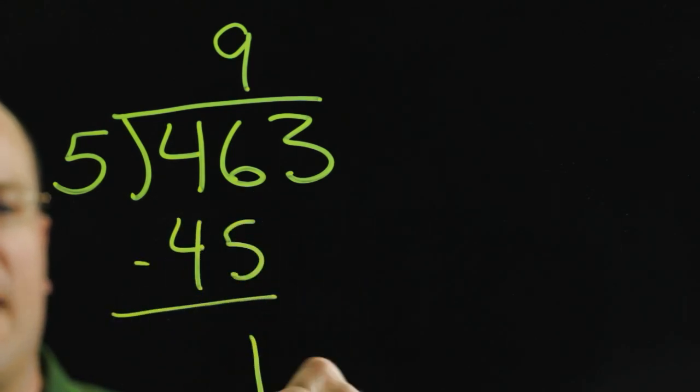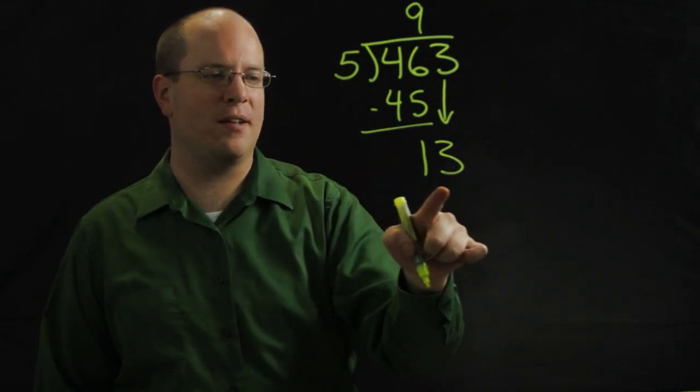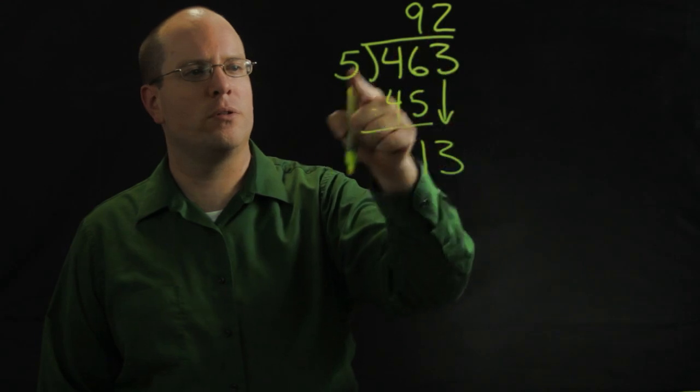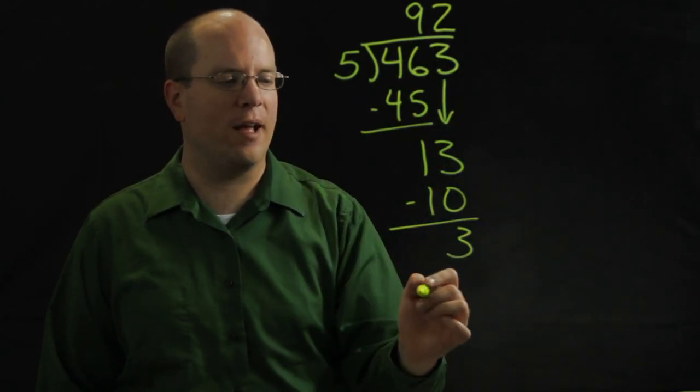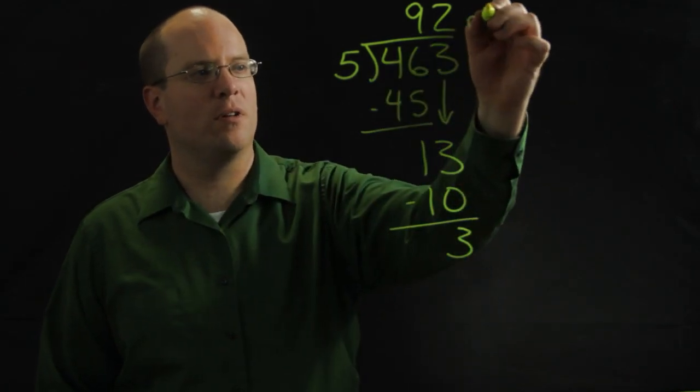Take those out, I have one left. Bring this 3 down. How many fives can I take out of that 13? I can take 2. 2 fives is 10. Take those out, I have 3 left. I don't have anything left to bring down, so that 3 becomes my remainder.